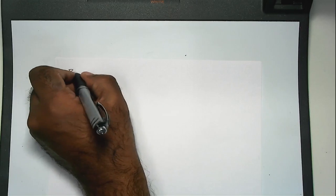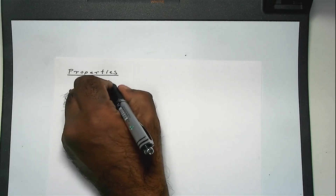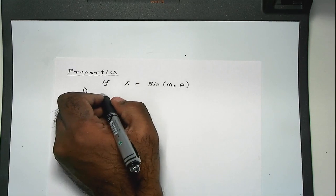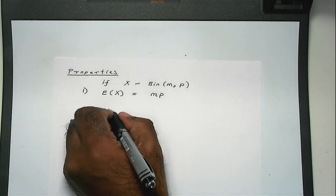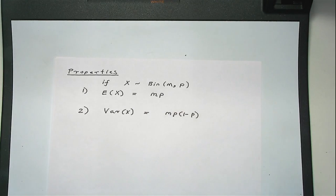Next, the properties. There are two simple properties. If x is a binomial variable, then the expected value is m times p, and the variance is m times p times one minus p. I don't expect you to know how to prove this, but you can prove them — they're not really difficult to prove.